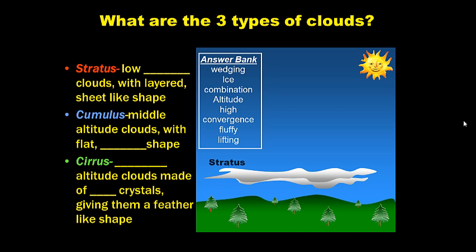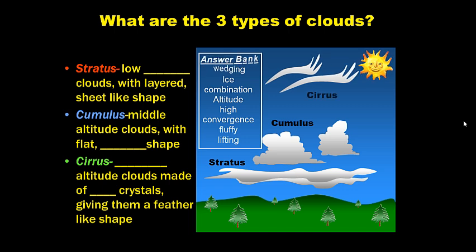All right, so, what are the three types of clouds? We got stratus, cumulus, and cirrus. Question on the left-hand side. Answer on the right-hand side. Use the answer bank to determine which words best complete the sentences there. Go ahead and pause this while you write. I'm going to move on.